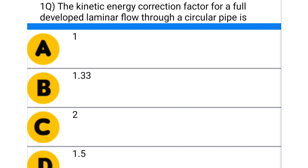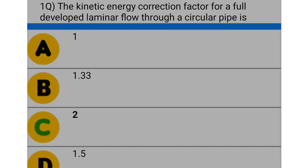The first question: the kinetic energy correctional factor for the fully developed laminar flow through a pipe is — option A: 1, option B: 1.33, option C: 2, option D: 1.5. The correct answer is option C: 2.